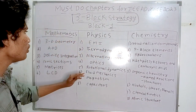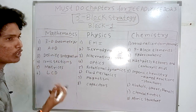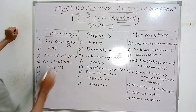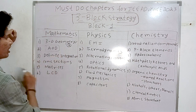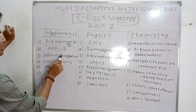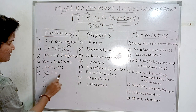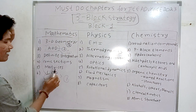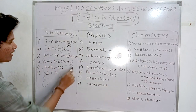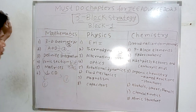From block one, in mathematics, 3D geometry has the highest weightage. In JEE Advanced 2022, I received two questions from 3D geometry — very easy but somewhat tedious. AOD (applications of derivatives) also gave two questions, including one mixing definite integration with AOD.